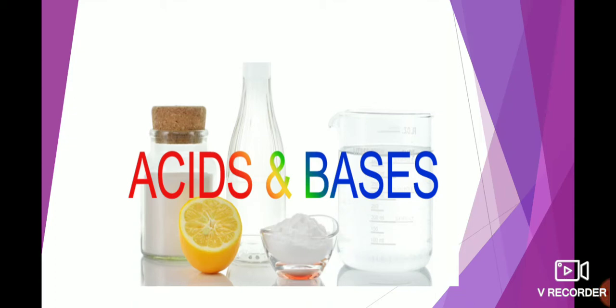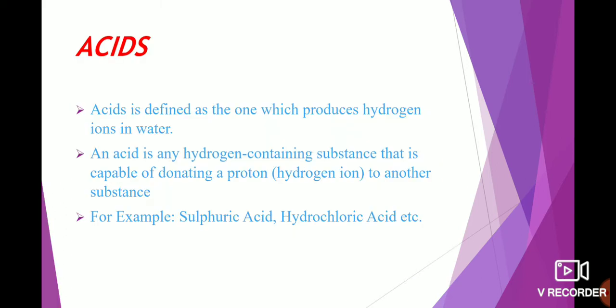Acids and bases. Now we start a new module on acids and bases. Firstly, we deal with acids — what is meant by acid, which is familiar to us and which we use in our day-to-day life. These are not stronger acids. For example, we use lemon, which contains citric acid. We also have milk, which contains lactic acid, and so on.